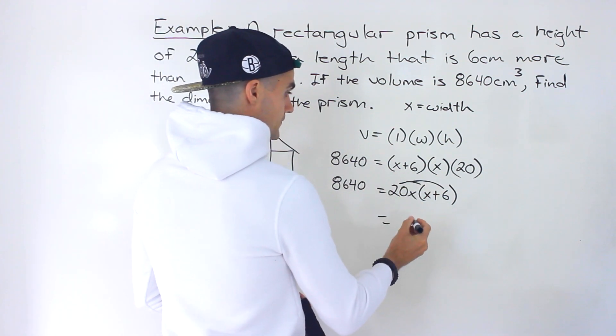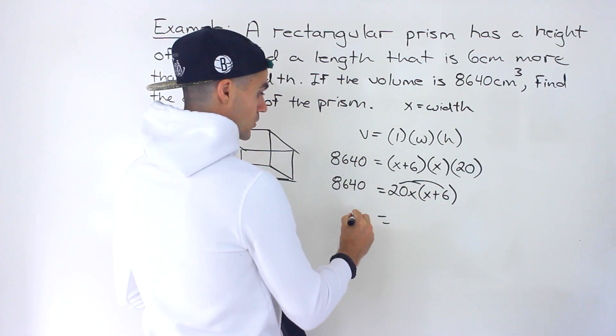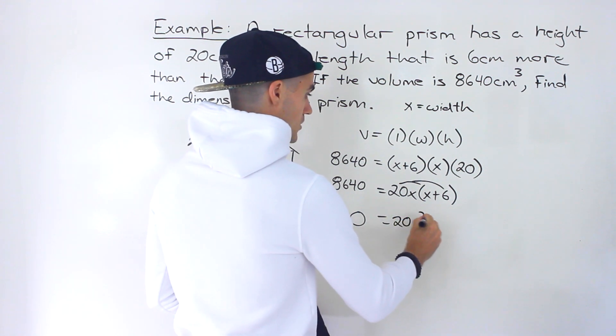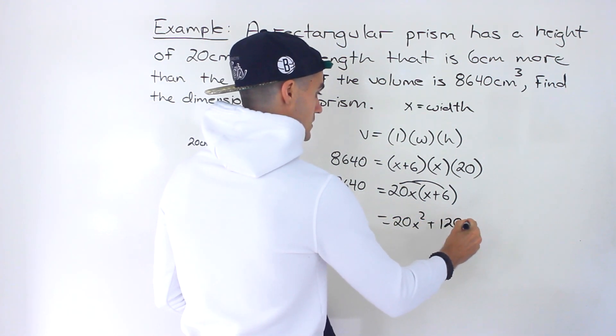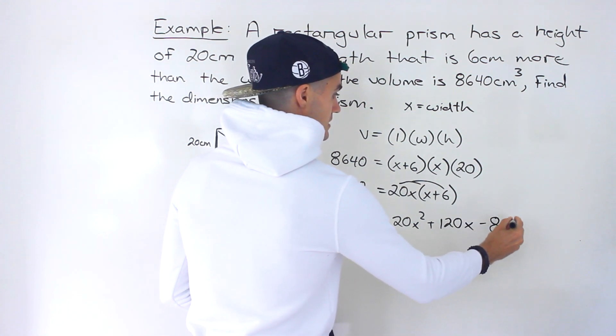From here I'll just expand. I'll distribute the 20x inside and then bring the 8640 over. So we'd end up with 0 on this side. We'd have 20x squared plus 120x minus 8640.